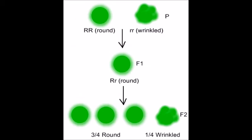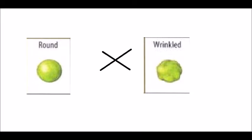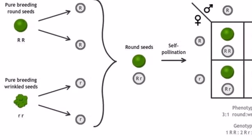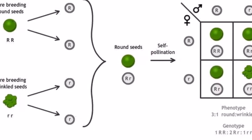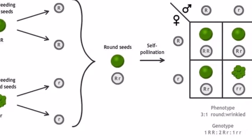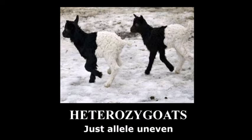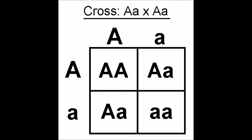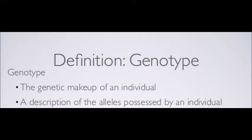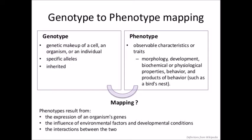Mendel had created true breeding strains of peas, one of which was homozygous for the smooth allele and the other was homozygous for the wrinkled allele. When he crossed these two strains, all the peas produced were smooth, since all offspring inherited a smooth allele from one parent and a wrinkled allele from the other — making all offspring heterozygous. This cross can be represented with a Punnett square, which we can use to determine the genotypes of the offspring from the genotypes of the parents. An organism's genotype as well as its environment determines its phenotype, which is the combination of its observable traits.